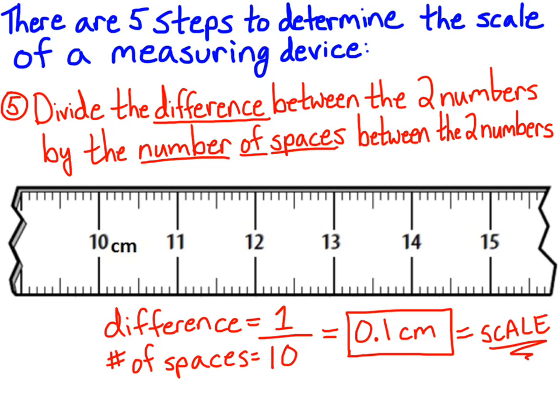Once you have determined the scale, you'll be able to make accurate measurements with that device. This works on any device that has graduations, such as a ruler, graduated cylinder, beakers, or thermometers.